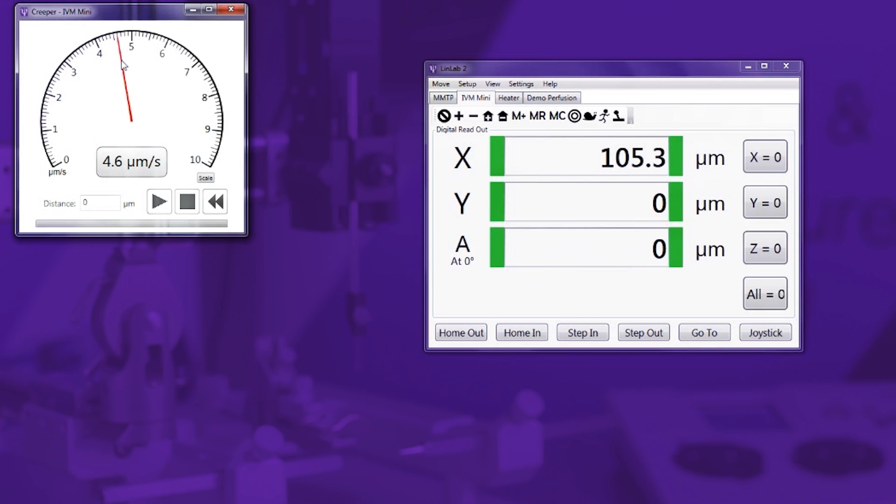Linlab's unique creeper function minimizes tissue damage when penetrating deep into your sample. This function allows the probe to creep to a desired position at a predefined speed much more smoothly, slowly and reliably than adjusting by hand.